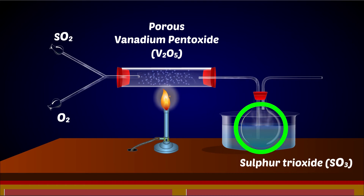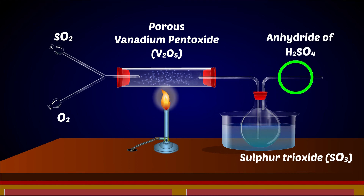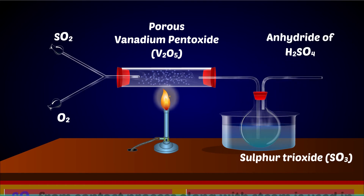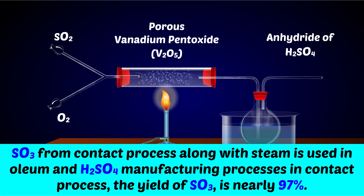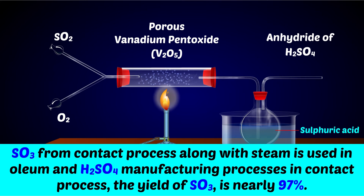Sulphur trioxide is the anhydride of sulphuric acid. Therefore, sulphur trioxide from the contact process along with steam is used in oleum and sulphuric acid manufacturing in the contact process.